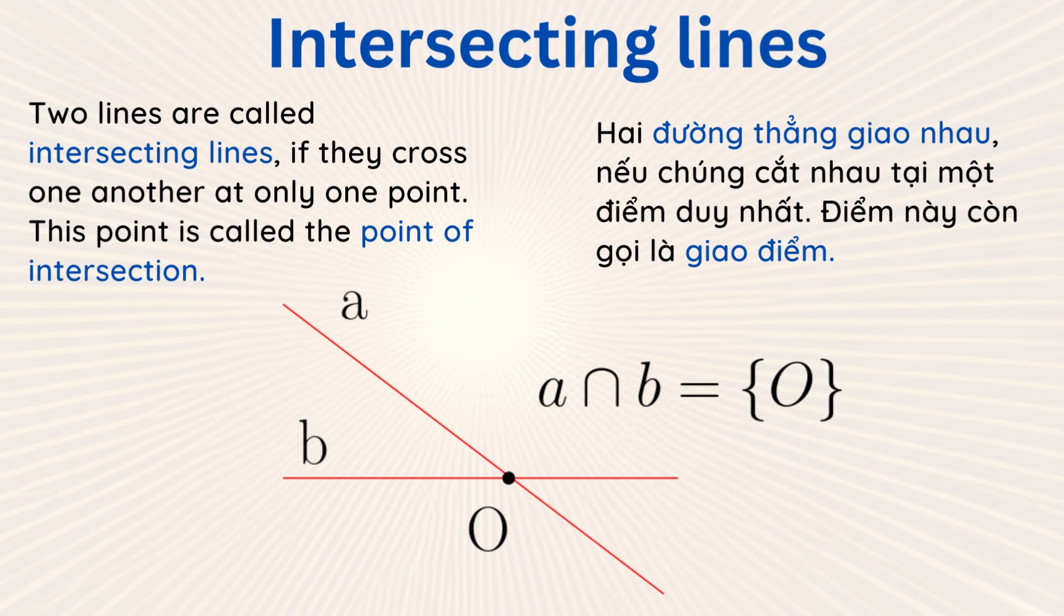In mathematics, the capital character U put upside down represents the intersection as shown there. And the point O is the point of intersection.